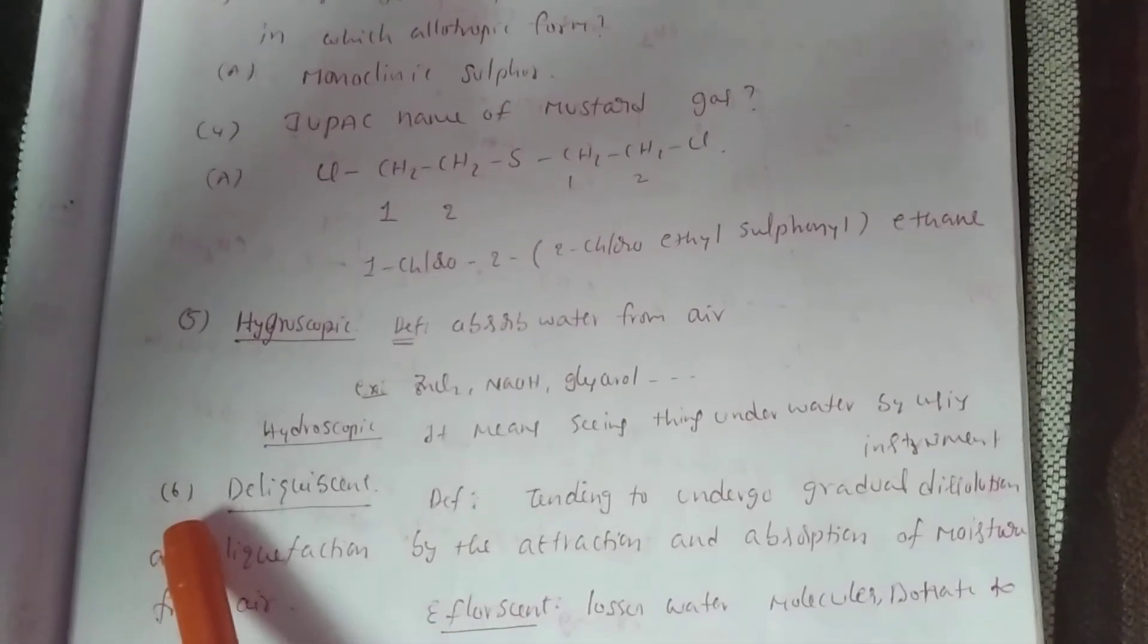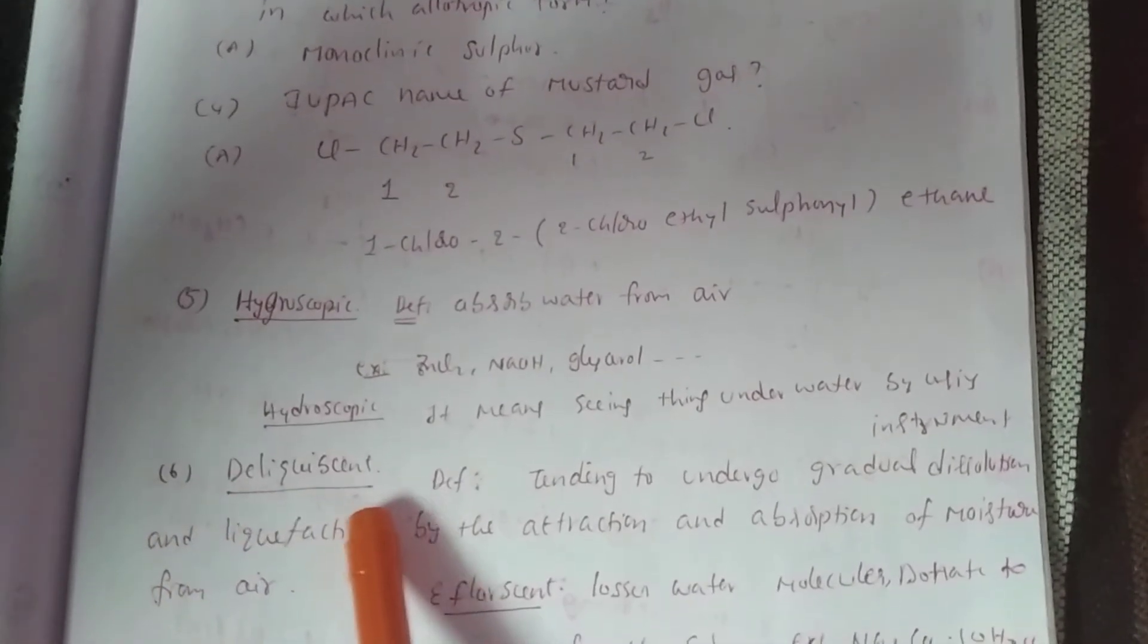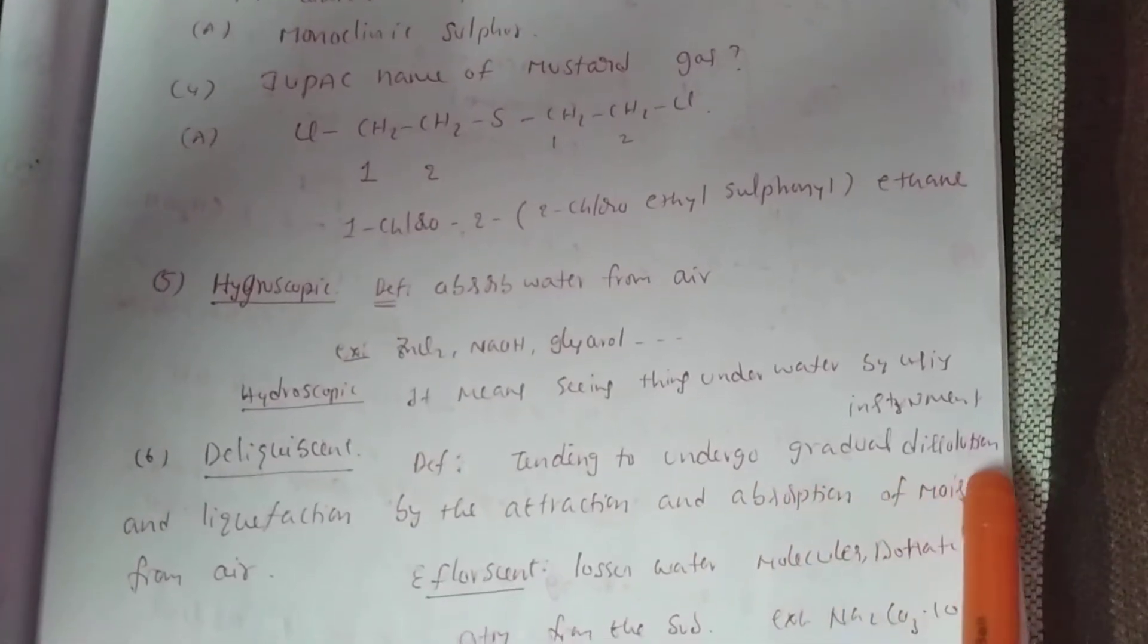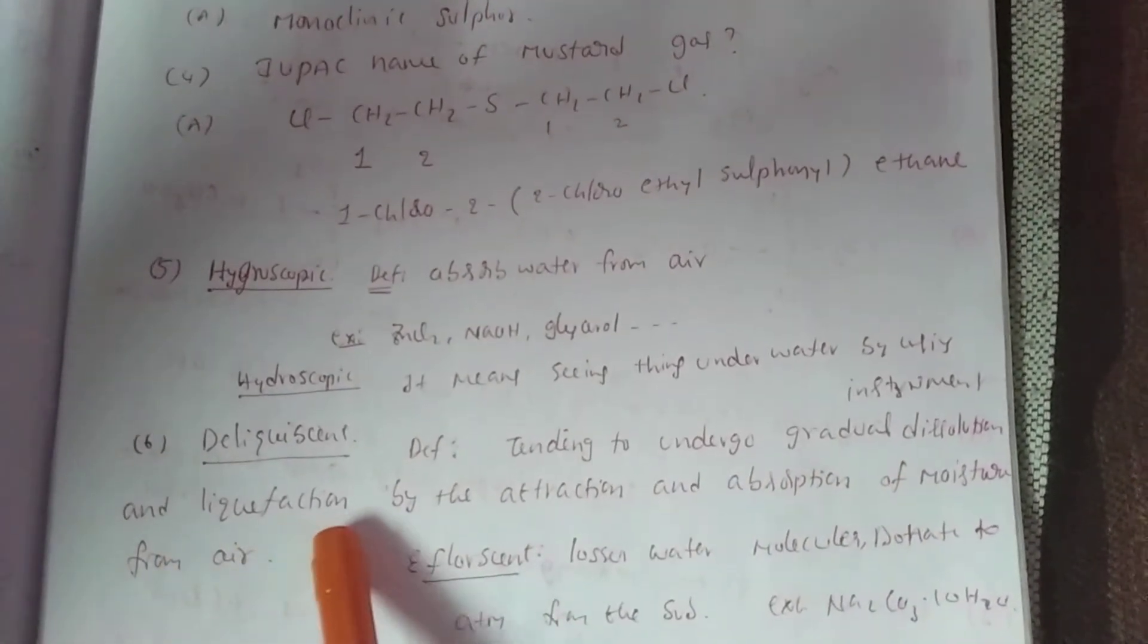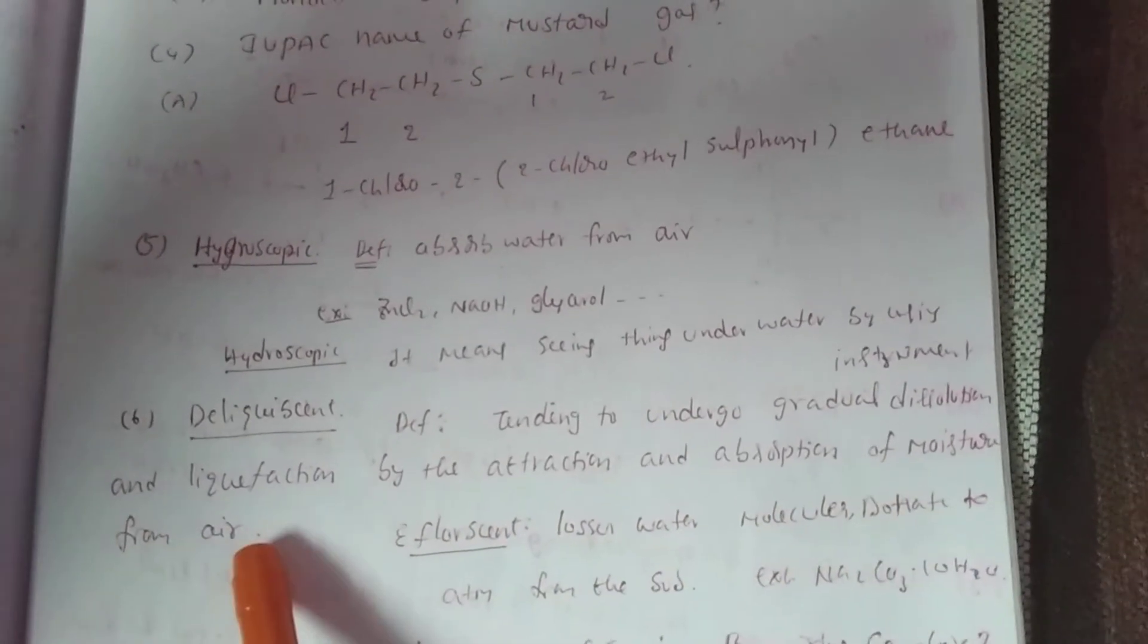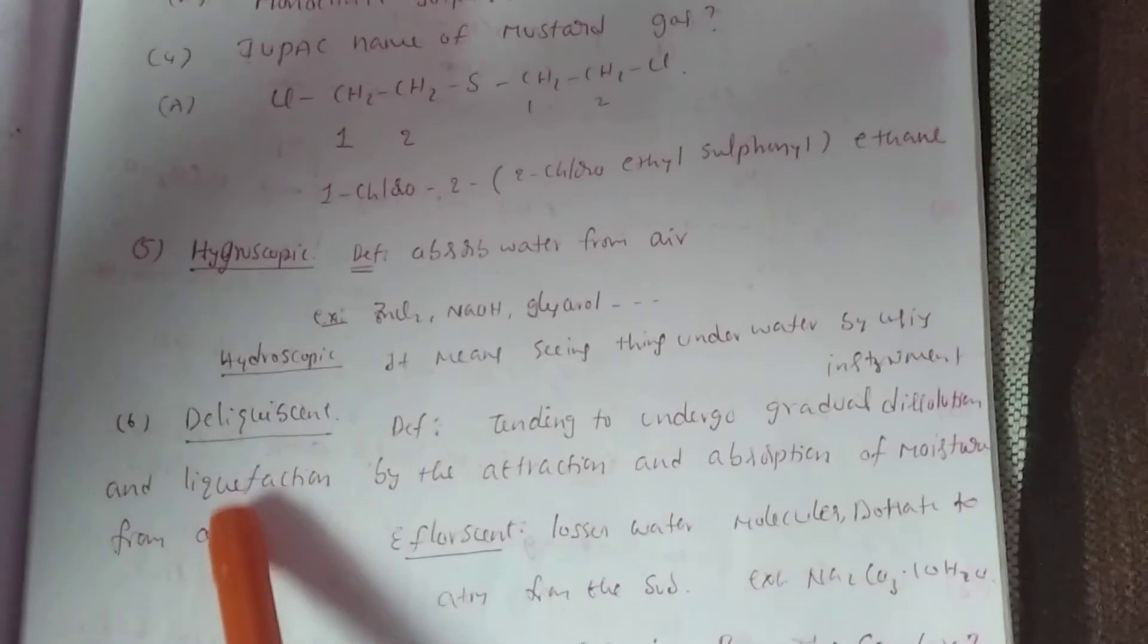Next point, sixth one. Deliquescent definition: tending to undergo gradual dissolution and liquefaction by attraction and absorption of moisture from air. It is known as deliquescent.